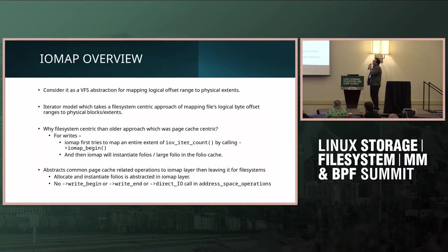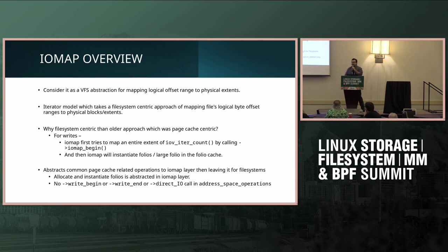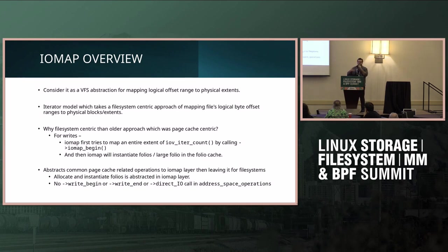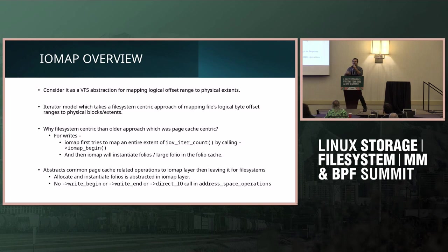As an overview, IOMAP has more or less become a VFS abstraction for providing your logical file offset range to physical extents. It's an iterator model that expects the file system to provide operations like IOMAP ops. It takes a file-system-centric approach rather than the previous page-cache-centric approach — we now first query the file system to provide a large extent, then iterate over folios within that mapped extent. Previously, we would instantiate the folio in the folio cache, lock it, and call get_blocks every time. This also abstracts common page-cache-related operations within the IOMAP layer, so you no longer need to implement things like write_begin and write_end.